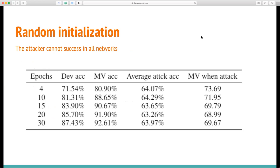We assume that the attacker cannot succeed against all our networks — for most networks, they will still make the correct prediction. From the results, the majority vote accuracy on attacked images is higher than without majority vote. Also, with increasing epochs, the majority vote accuracy decreases because the networks become more similar to each other.